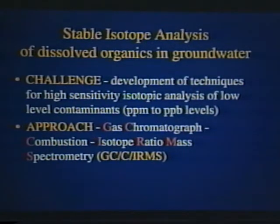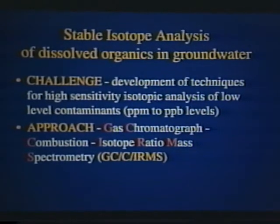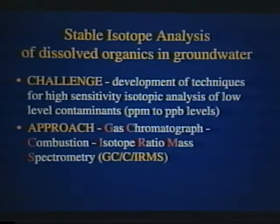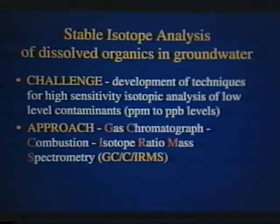All of the work shown so far could have been carried out using conventional methods of mass spectrometry and sample handling available to us for decades, primarily because if you're taking a look at free product or pure solvent phase, you have no sample size limitation. The real challenge was the development of isotope techniques sensitive enough to measure dissolved organic contaminants at the very low concentrations at which they are present in groundwater — at the PPM to PPB levels at which these contaminants routinely appear in the field. The key was the development of compound-specific or continuous flow GCC IRMS.